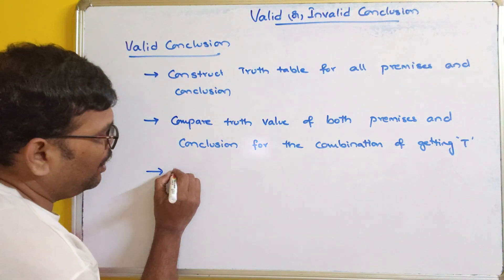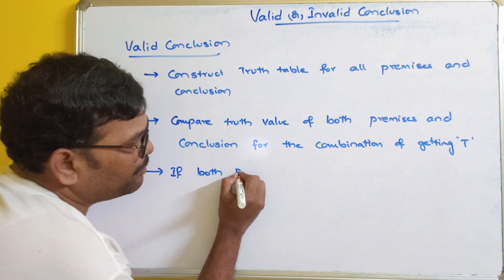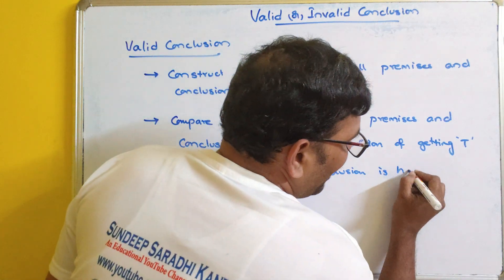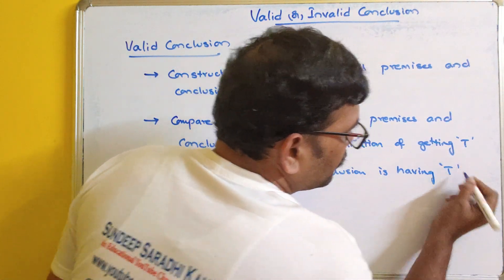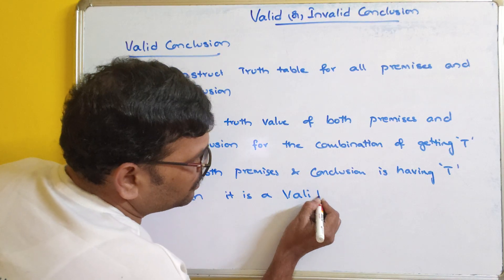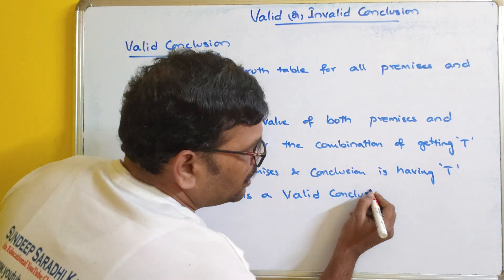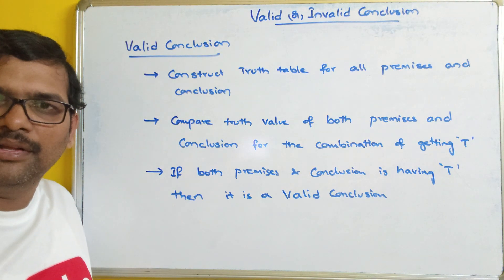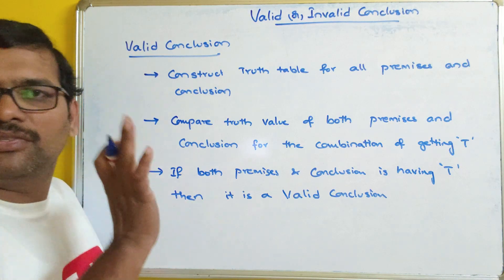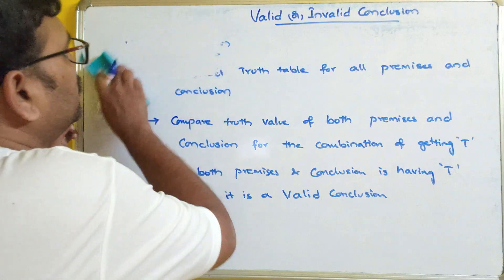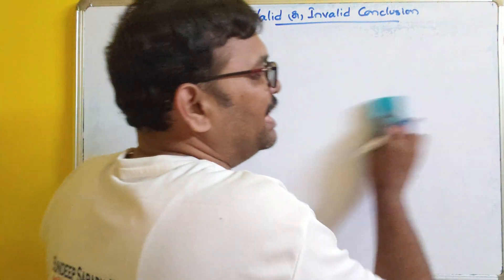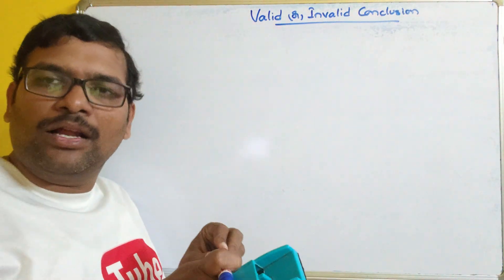If both the premises and the conclusion are having true, then we can say it is a valid conclusion. Otherwise we can say it is an invalid conclusion. So let us see an example so that if you are still having any doubts, those will be clarified. We consider some premises as well as the conclusion, construct the truth table for both, and then compare.